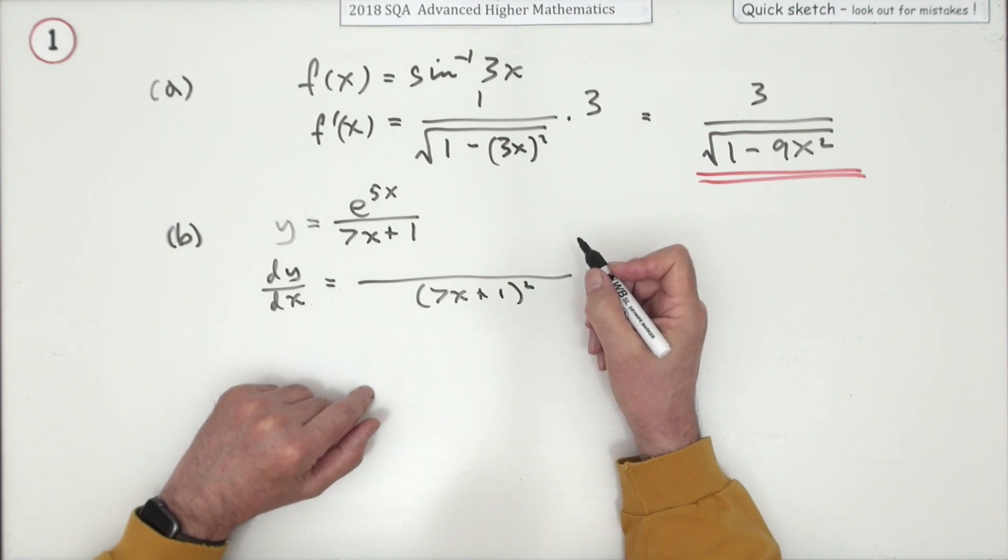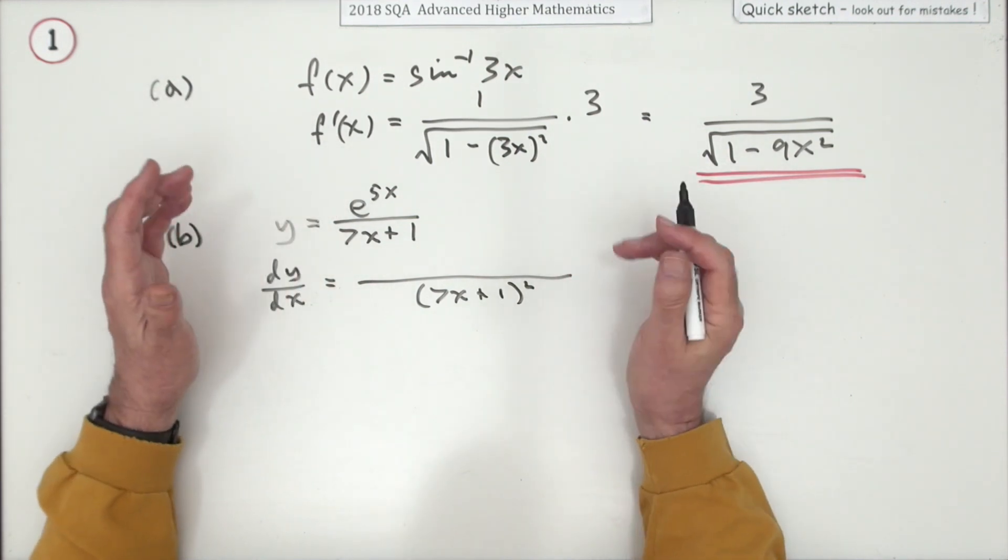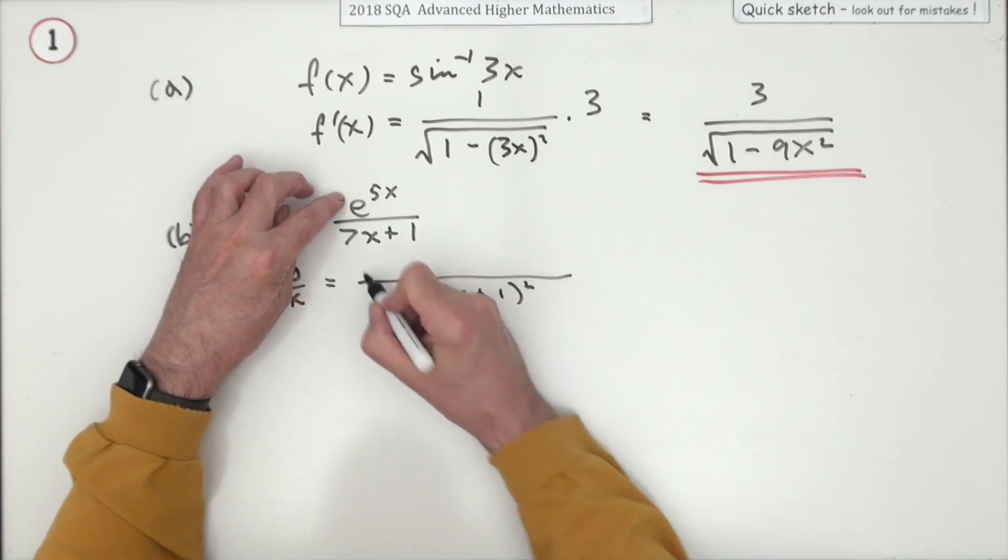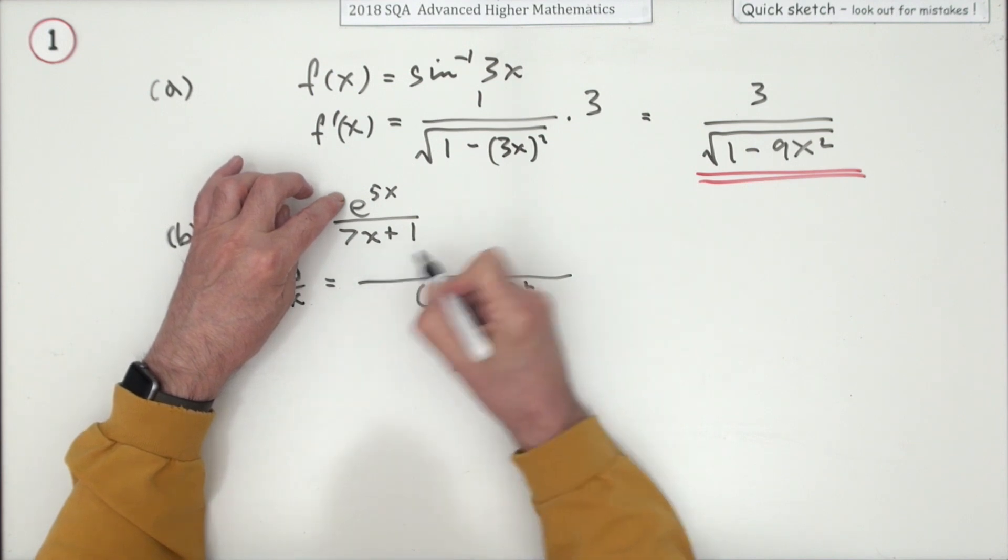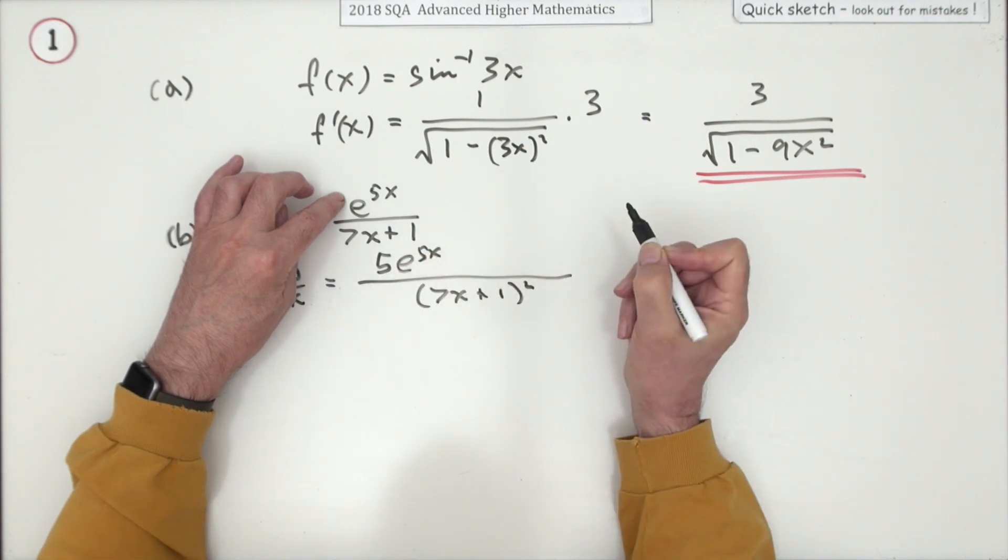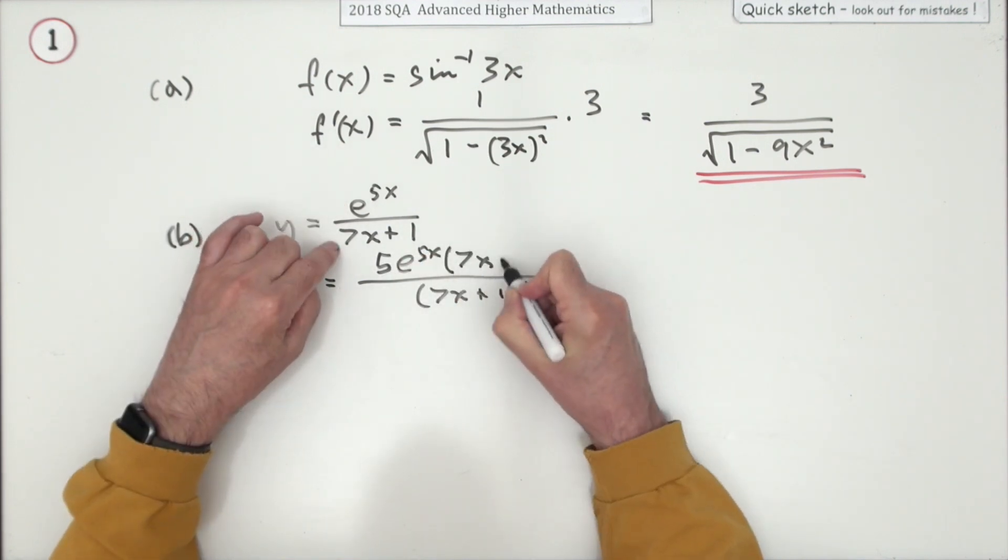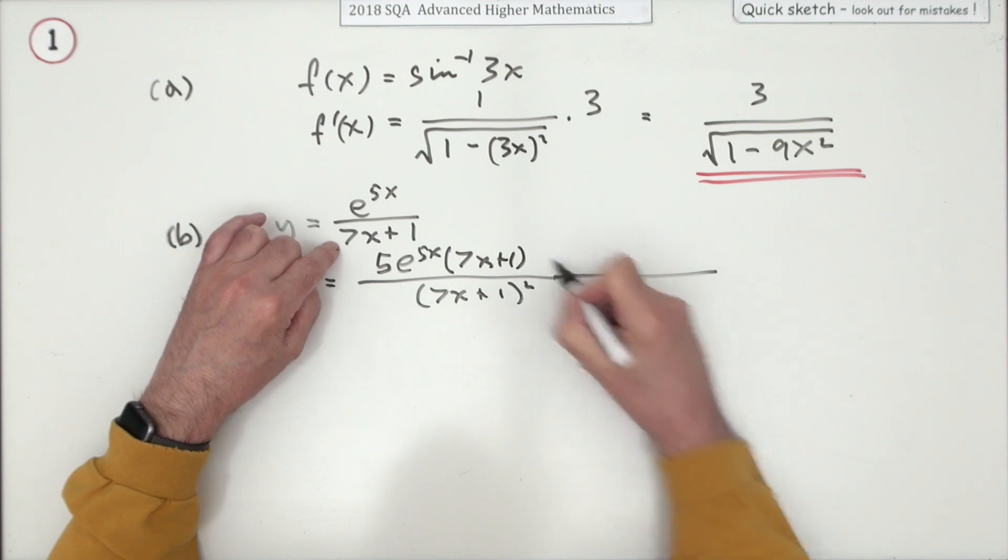So that's you square the denominator, and then just as in the product rule, because that's what it is essentially, you differentiate them one at a time. So e^(5x) stays as e^(5x), but gets multiplied by the inner derivative 5, and then the 7x plus 1 waits.